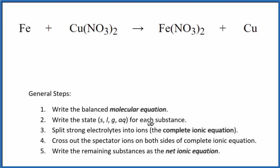Then we need to write the states for each substance. So for iron, that's all by itself. That's a metal. That's going to be a solid. If you know your solubility rules, nitrates are very soluble. So this will be aqueous. It'll dissolve in water, dissociate into its ions. Again, another nitrate. So that's going to be aqueous. And copper will be a solid.